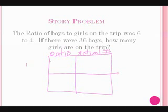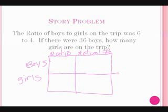And over here you write Boys and Girls. Now the first ratio of the boys to girls is 6 to 4, so you write that in the first vertical column. Now because there are 36 boys, we write that below the Actual Number.